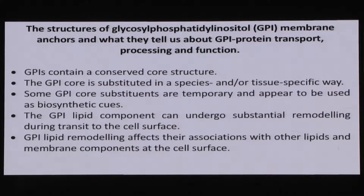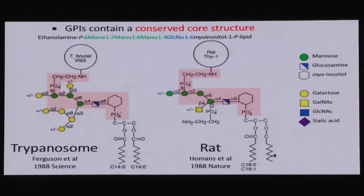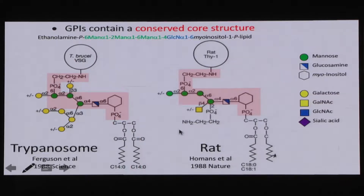As we determined more and more structures, we learned that GPIs generally contain a conserved core structure. Comparing the first two structures ever determined — the trypanosome one and one from rat Thy-1, done in collaboration with Alan Williams — the conserved core consists of ethanolamine phosphate, three alpha-mannose sugars, non-N-acetylated glucosamine, and the phosphatidylinositol phospholipid (though the lipids are variable between species). This suggested the core structures were conserved from trypanosome to rat — from protozoan to mammal — an evolutionary distance far greater than yeast to man.